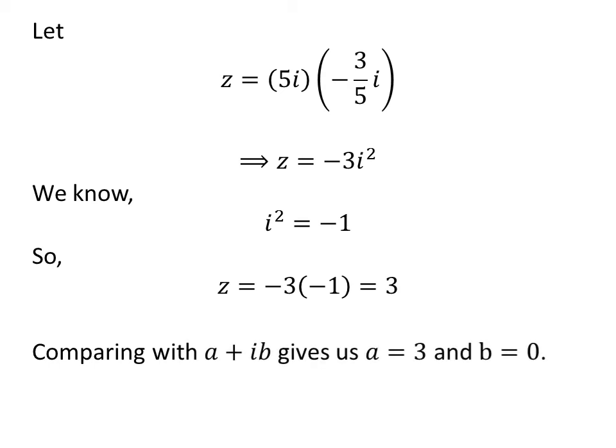Comparing z with a plus i times b gives us a is equal to 3 and b is equal to 0.